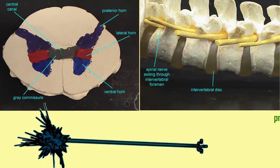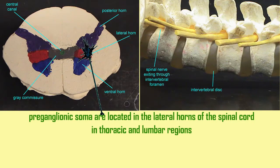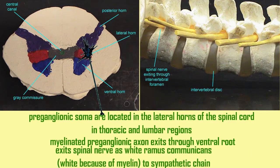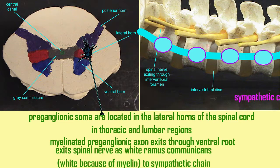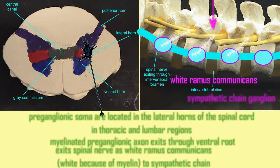The soma of the preganglionic neurons are located in the lateral horns of the spinal cord. These lateral projections exist in the thoracic and lumbar regions, but not in the sacral region. The axons of these neurons then depart through the ventral root, like other motor neurons. And because they have myelin, when they exit the spinal nerve, they form what's known as the white ramus communicans — white because of the myelin giving them a lighter color — and this then projects to the sympathetic chain.